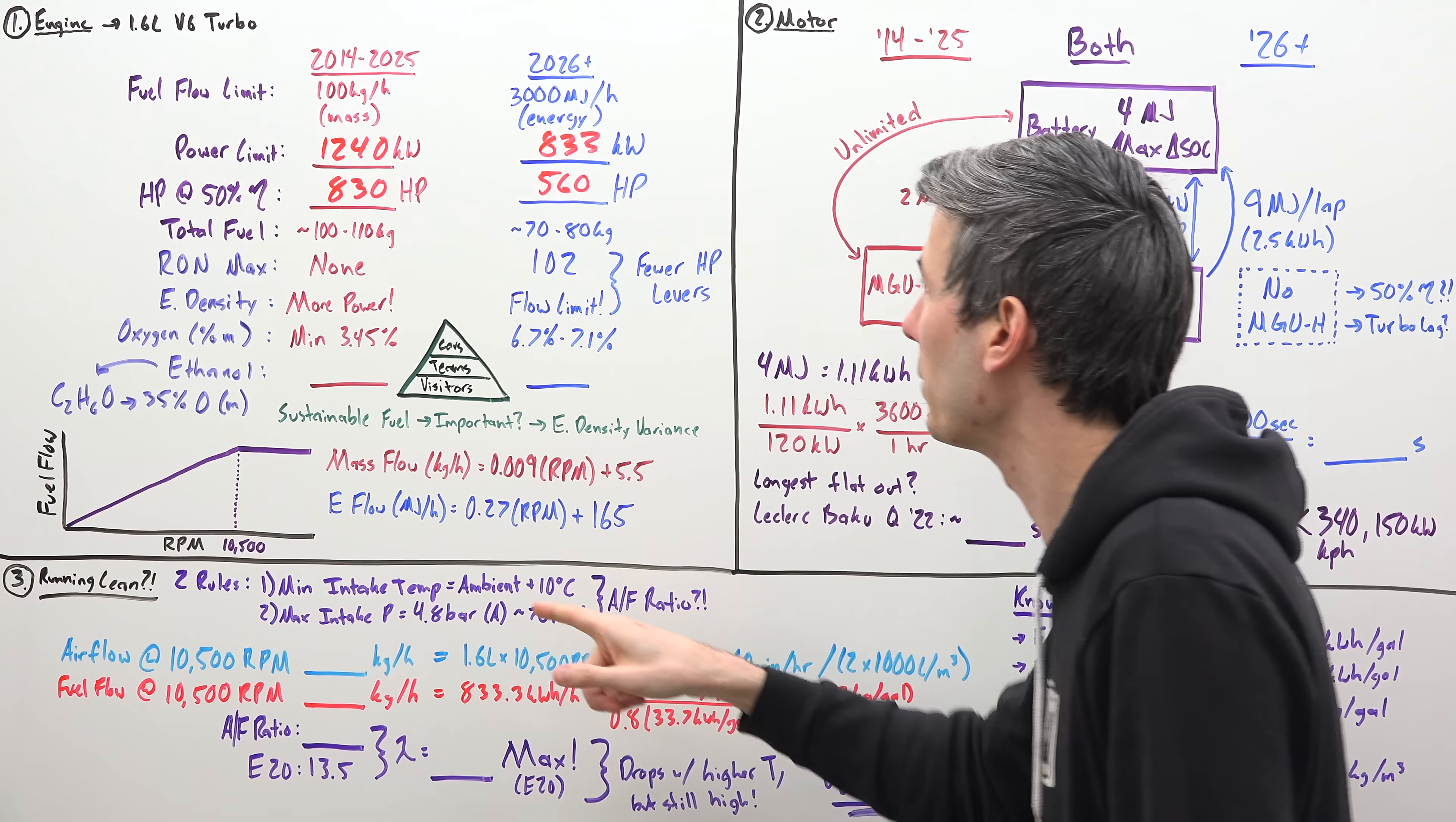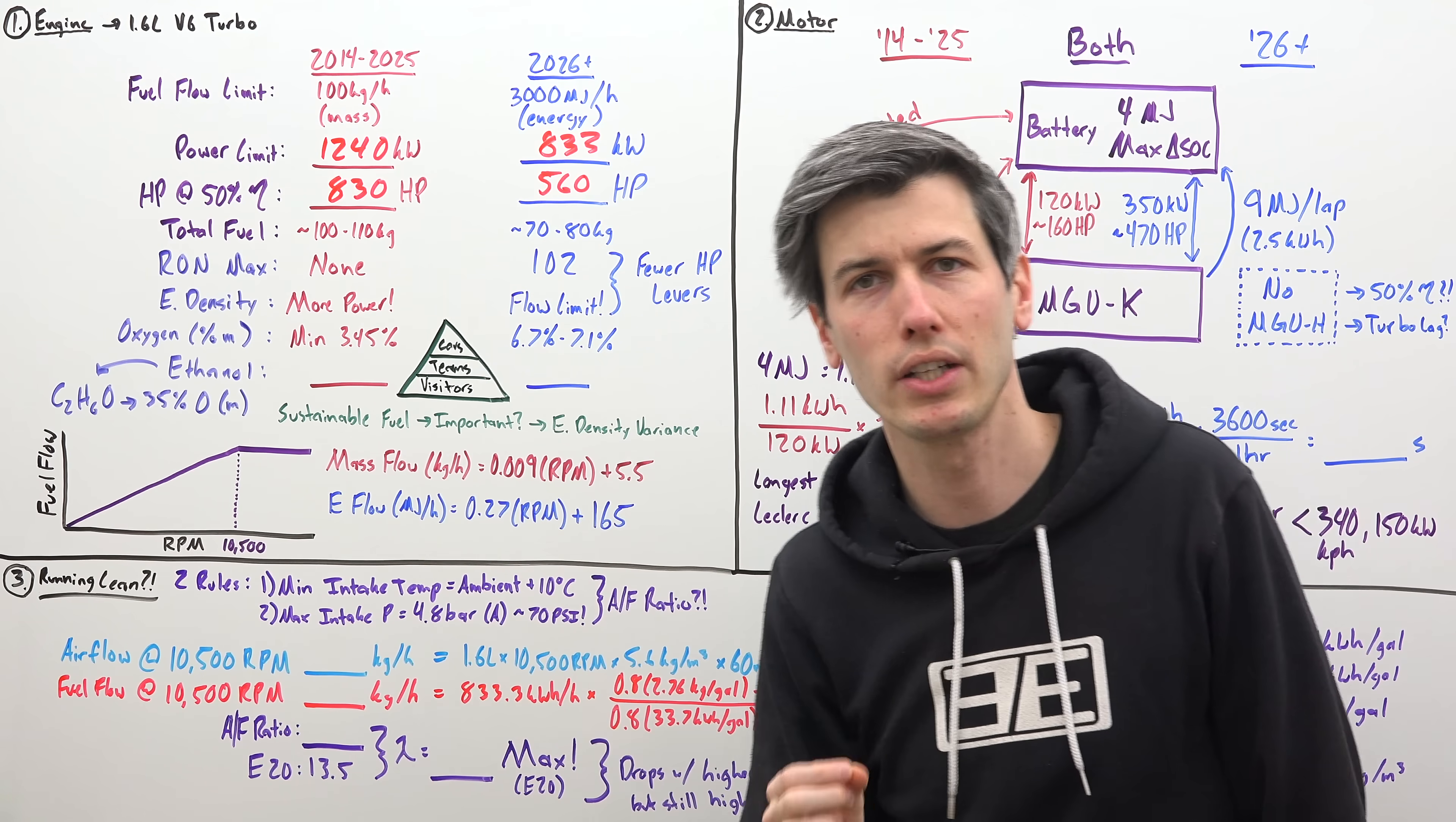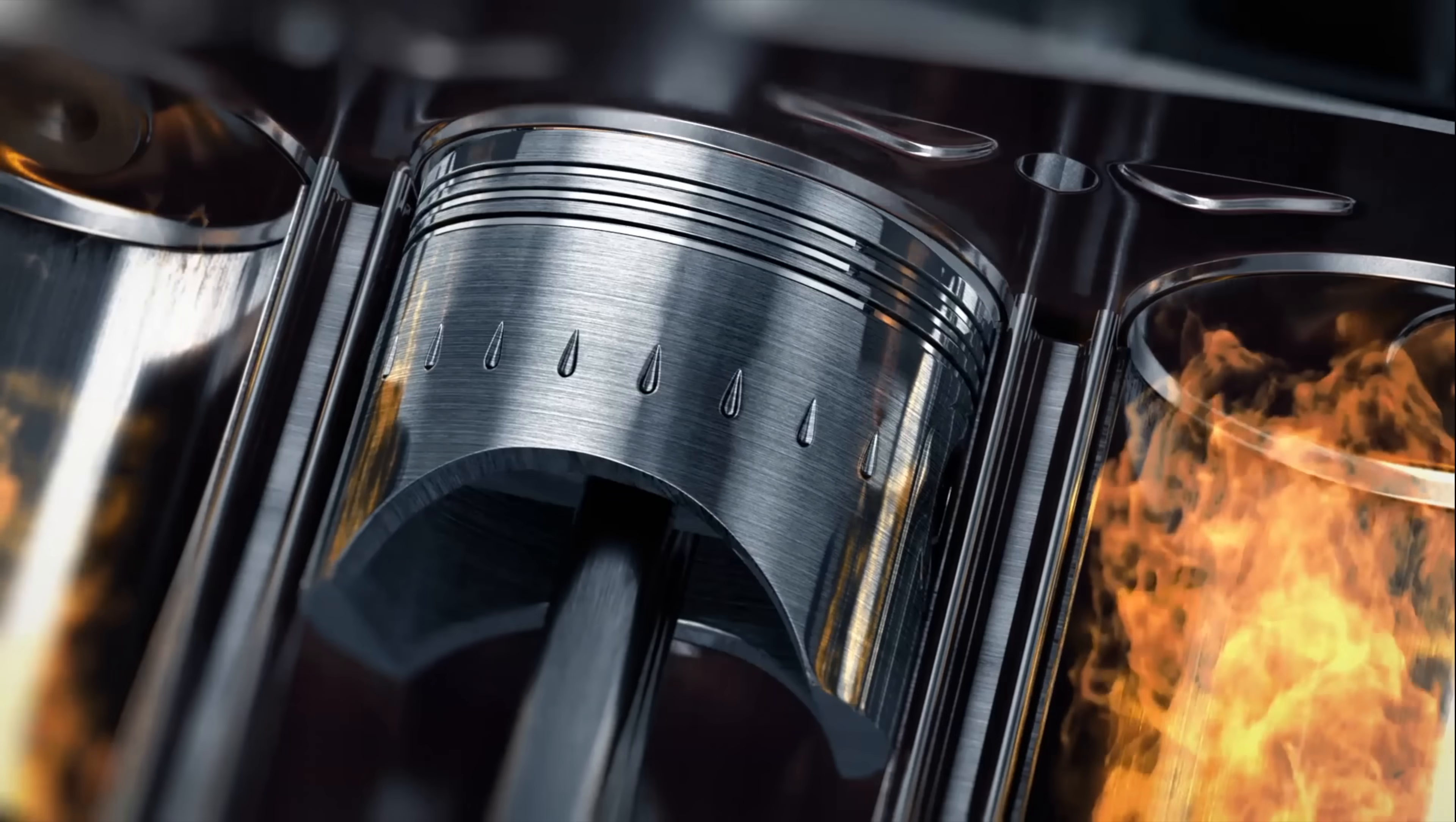That kind of goes away because now for 26, there is a limit on the octane number, a maximum which cannot exceed 102 research octane number. And also because you have this energy flow limit, say you have a more energy dense fuel. Maybe you save a little bit of weight, but that doesn't mean your engine can make more power because you're limited in energy flow, not mass flow.